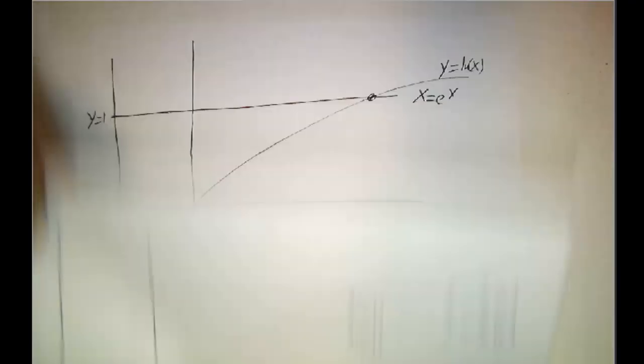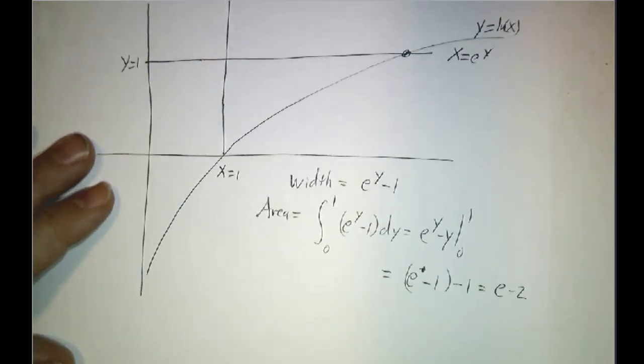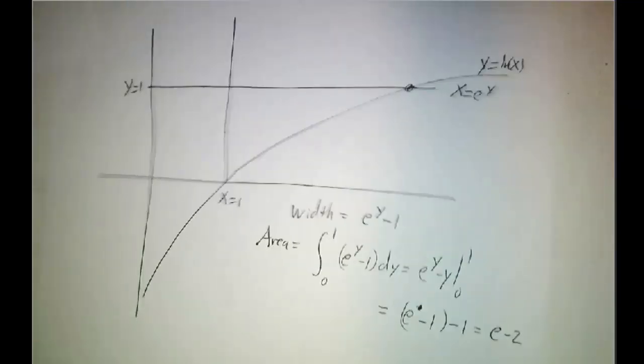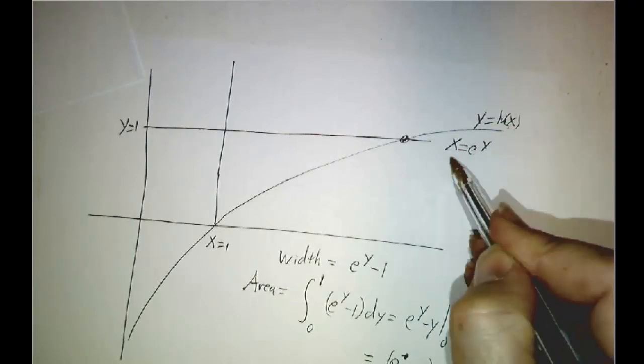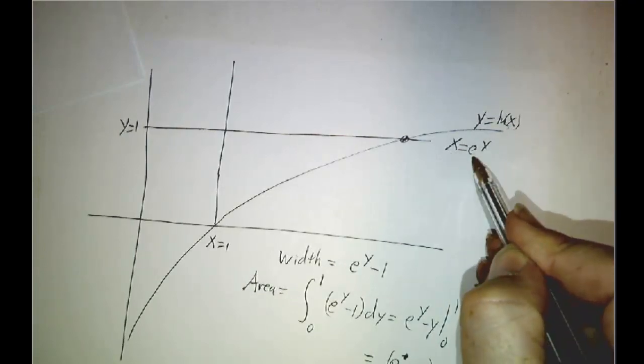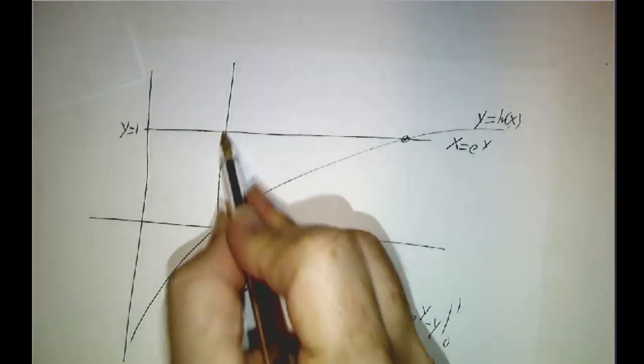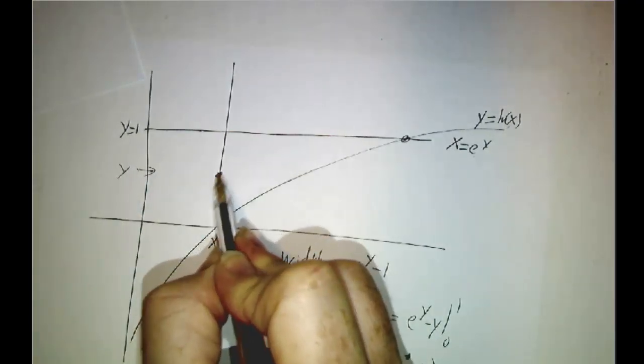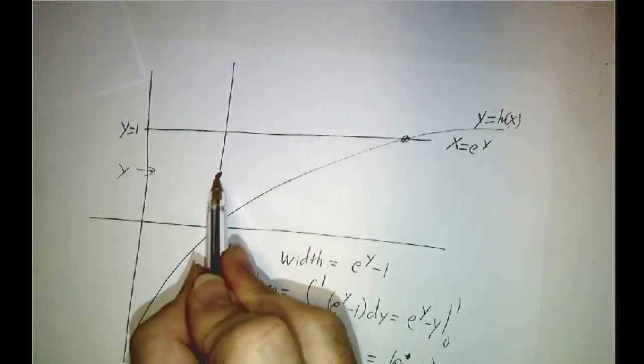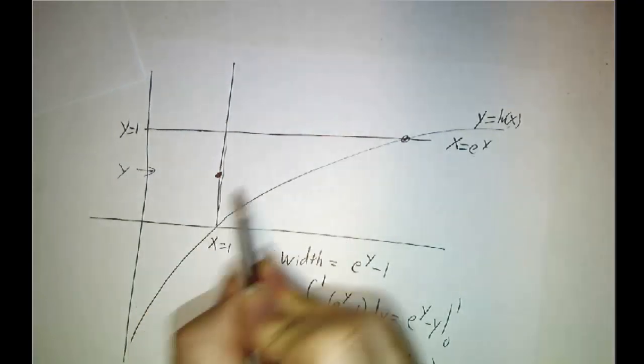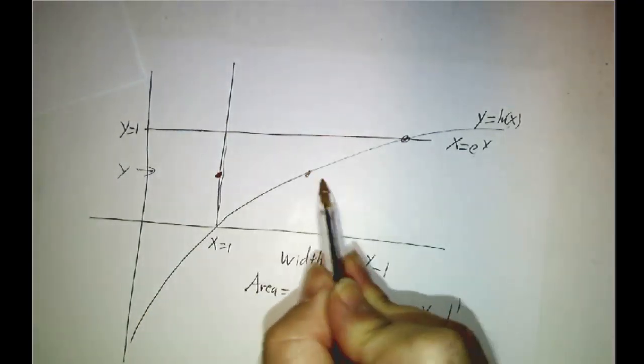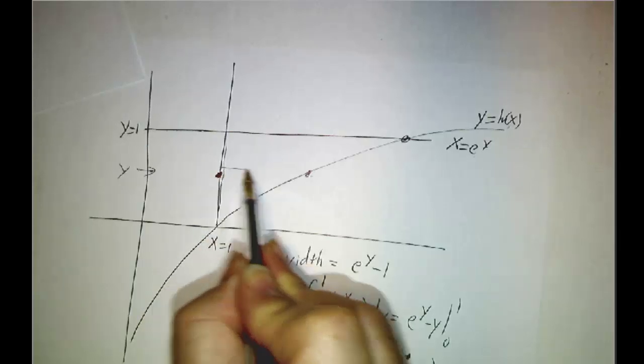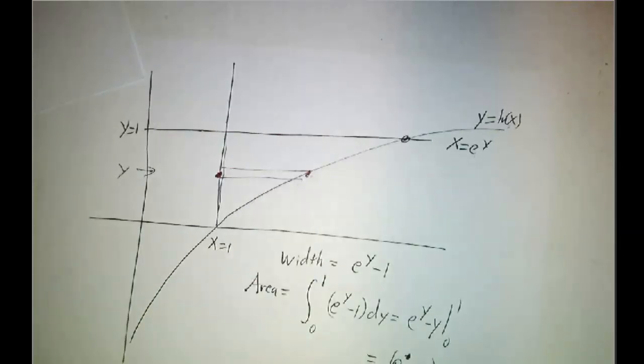On the other hand, if you slice horizontally, it becomes an easy integral. Instead of writing y equals natural log of x, write it as x equals e to the y. So for any given value of y, the minimum value of x is x equals 1. The top value of x is e to the y. The width of the strip is e to the y minus 1.